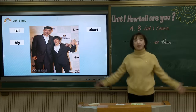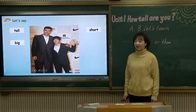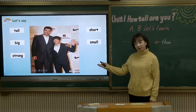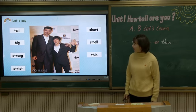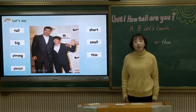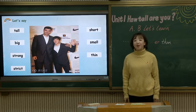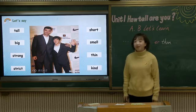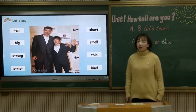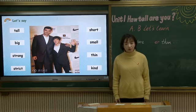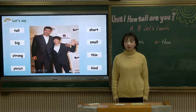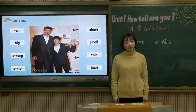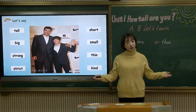What about this word? Yao Ming is big — he has a big build. Liu Xiang is small. Yao Ming is strong. Liu Xiang is thin. Liu Xiang is strict. Yao Ming is strict because Yao Ming is a coach, so he is very strict. And Liu Xiang is kind.